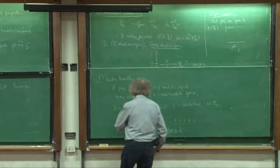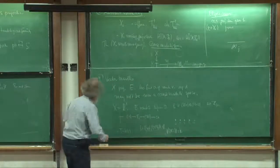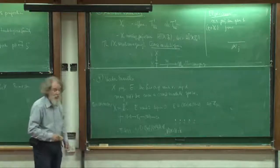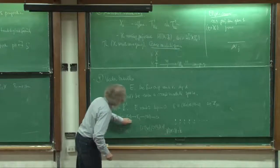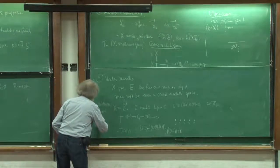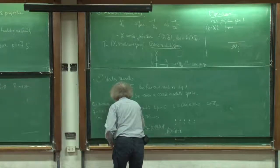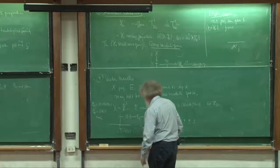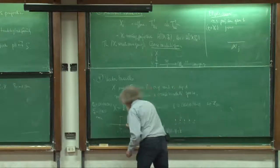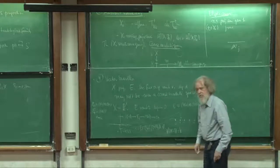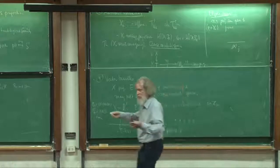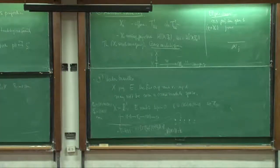Now consider the following family. Take a parameter space T equal to Spec k[t] and on P^1, take an extension 0 → O(-1) → E → O(1) → 0. To define an extension of two line bundles you need an element c in Ext^1(O(1), O(-1)), which is H^1 of O(-2) — a one-dimensional k-vector space. So I take T to be that c, and for each t in k I get an extension E_t. When t equals 0, that's the trivial extension — the direct sum — so E_0 is O(-1) ⊕ O(1). When t is nonzero, it's a nontrivial extension, and one can calculate that the nontrivial extension is just O ⊕ O.